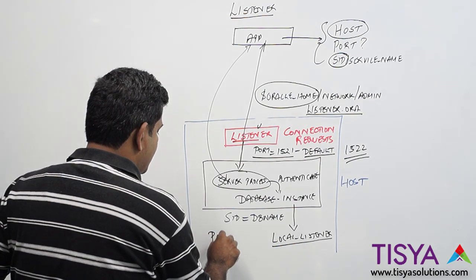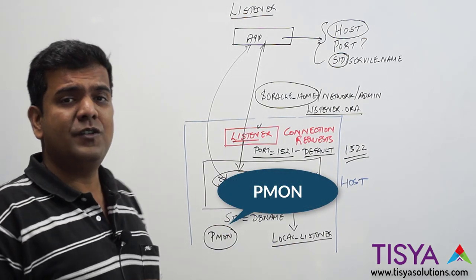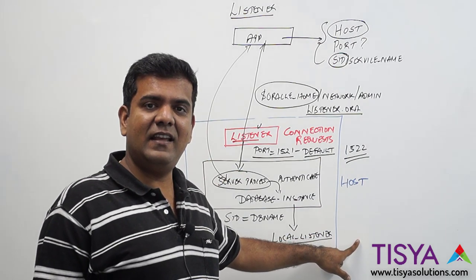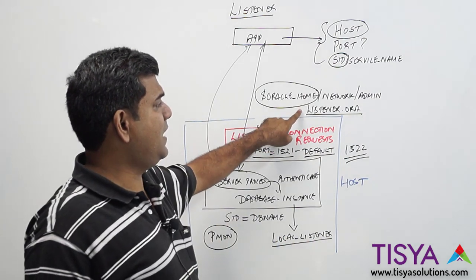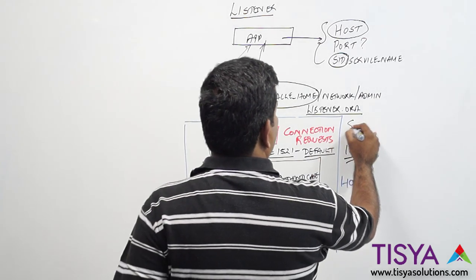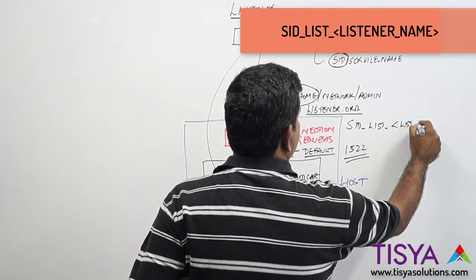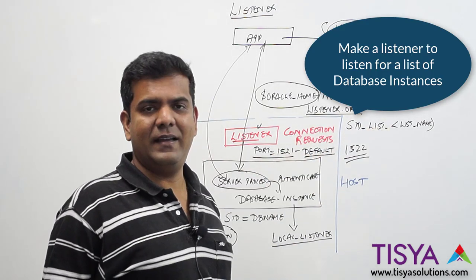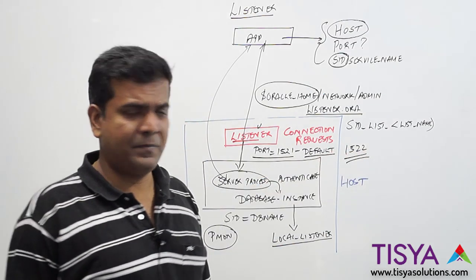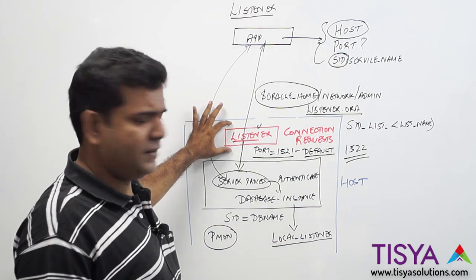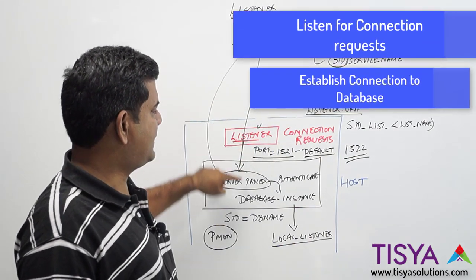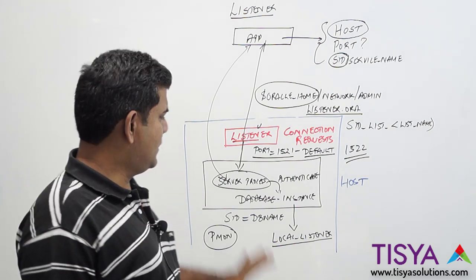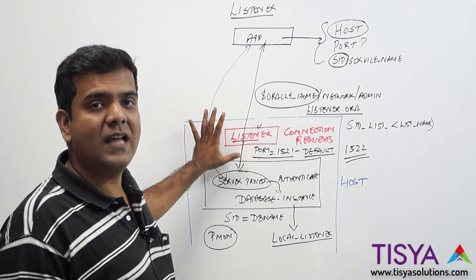The PMON process — process monitor — which is one of the background processes for a database instance, is responsible for registering with the listener. When you specify local_listener and provide a TNS alias pointing to a listener, PMON will register with that listener. Additionally, listener.ora has a parameter called SID_LIST_LISTENER_NAME, which can also be used to make the listener automatically listen for a list of instances on a non-default port. In summary, the purpose of the listener is to listen for connection requests and establish connections to the database. You may have one or more listeners; the default listener is 1521, and it is a very critical process for establishing database connections.